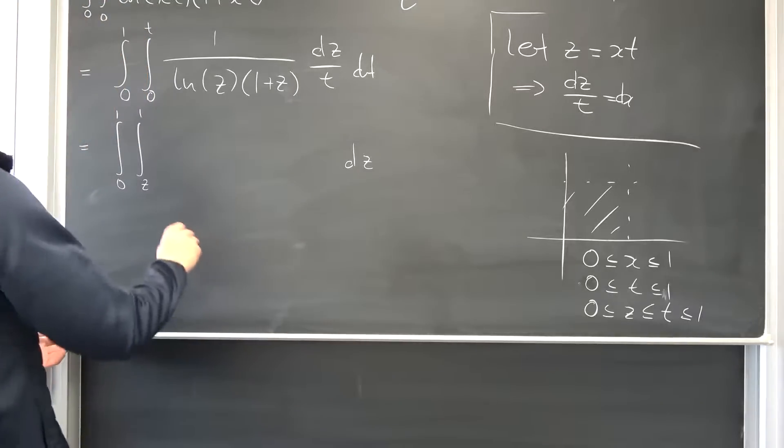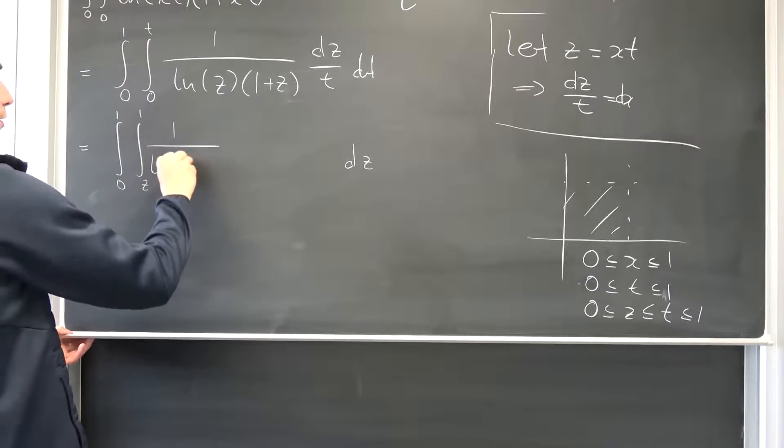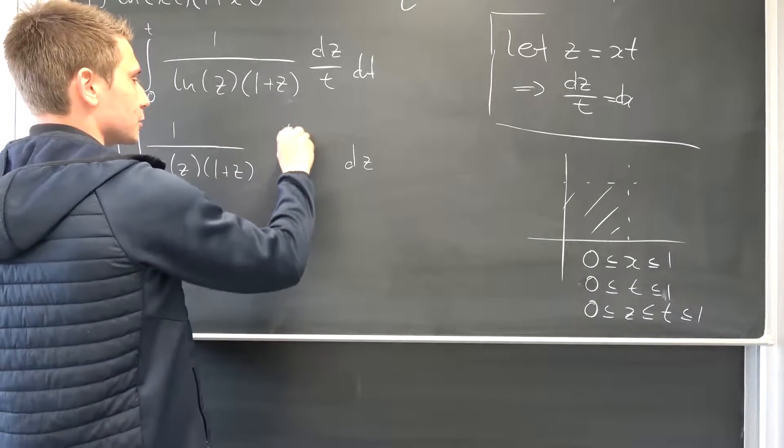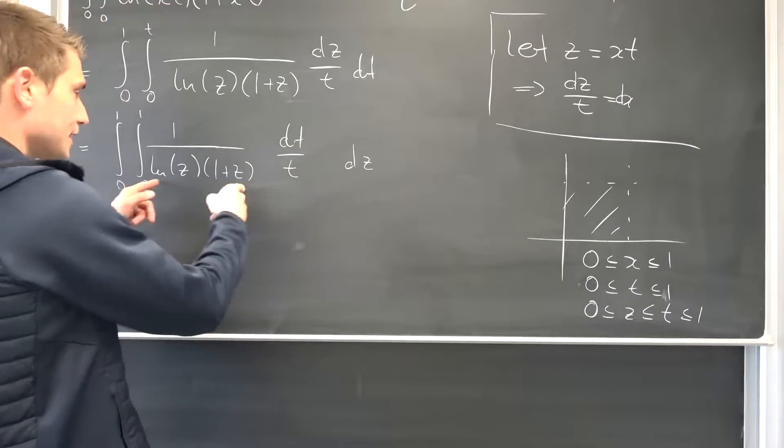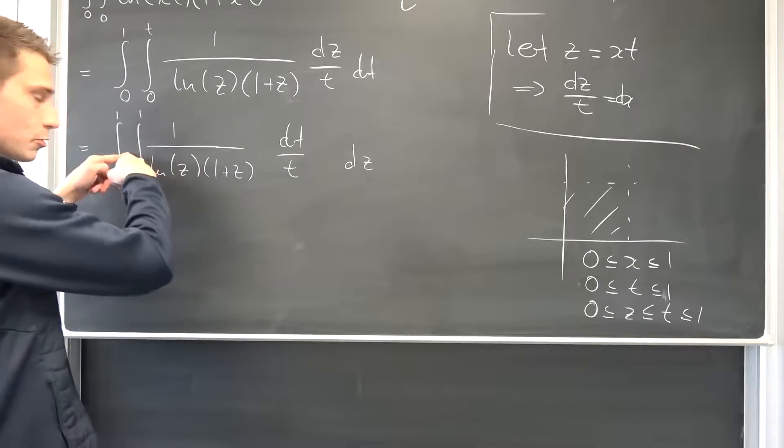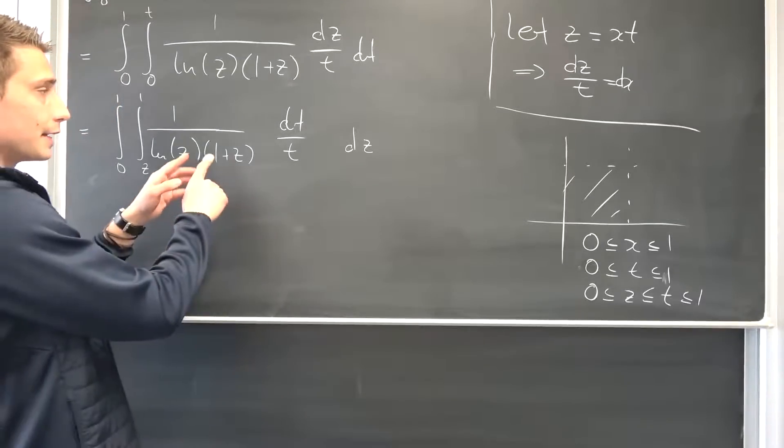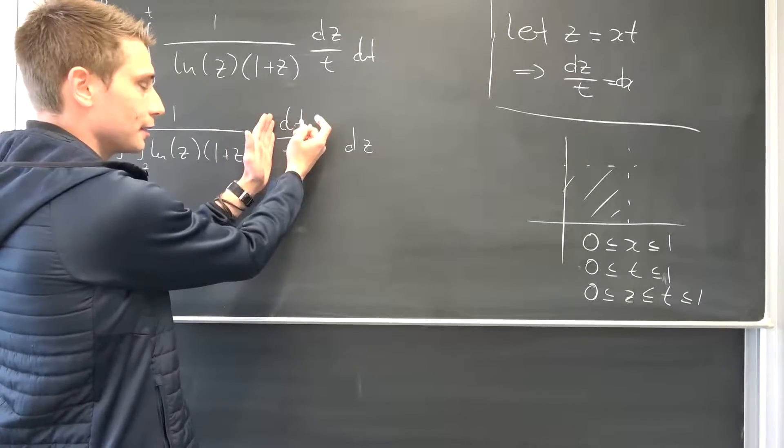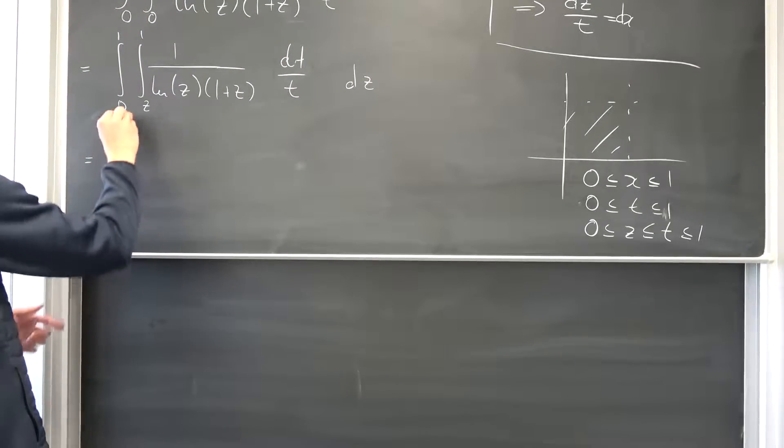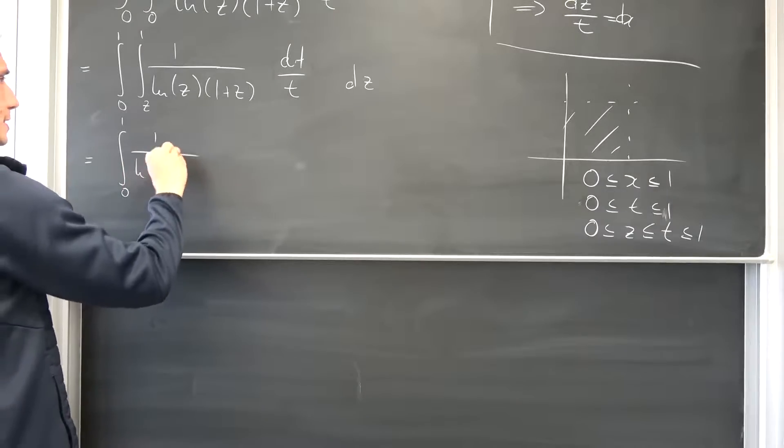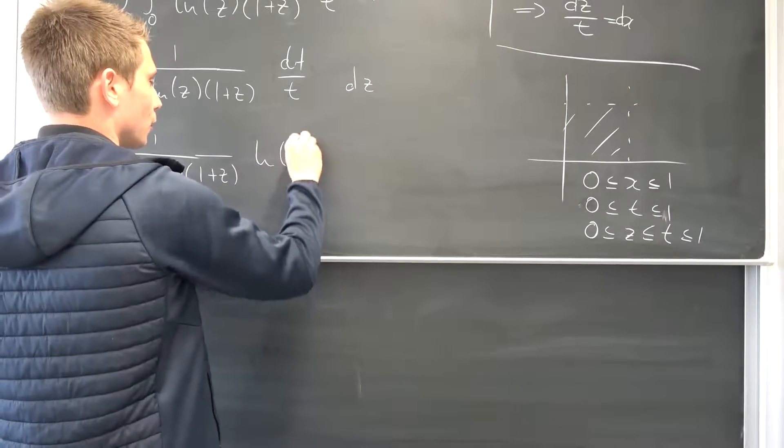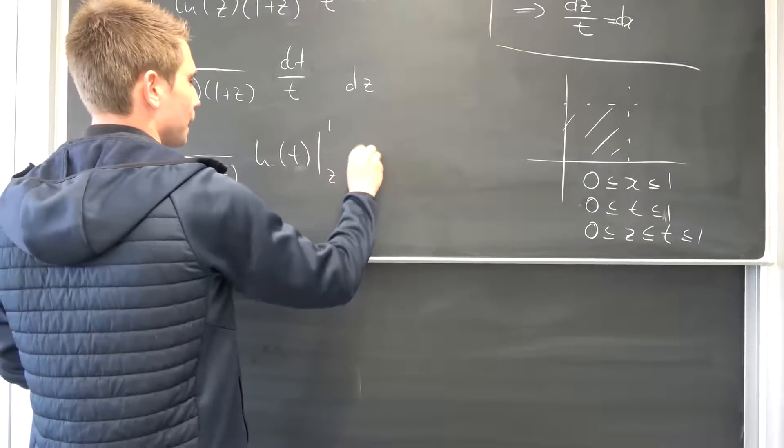I hope this did make sense to you guys. So meaning we are going to end up with 1 over natural log of z times 1 plus z, and then we are integrating dt over t. This is basically just a constant regarding this inner integral, so we can bring it to the front between those two integrals, also the dz. We can Fubini this like I used to say. Then we can integrate 1 over t with respect to t. I'm terribly sorry, giving us the natural log of t I said this before. Meaning we are going to get integral from 0 to 1, then 1 over natural log of z times 1 plus z, and then we have the natural log of t from z to 1, integrated with respect to z.